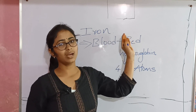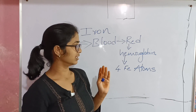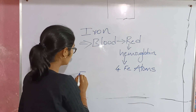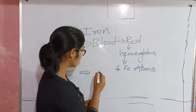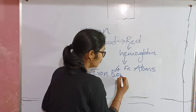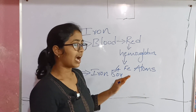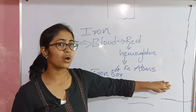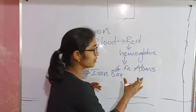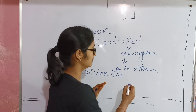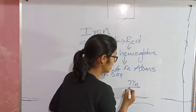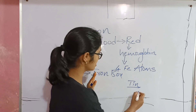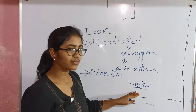Iron is found in blood. Next, we will talk about iron and food. Iron boxes have a tin coating — tin (SN) has less reaction with food and iron, so iron boxes are coated with tin on the surface.